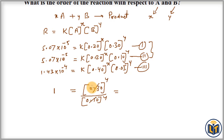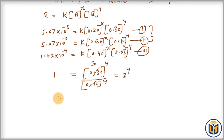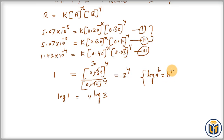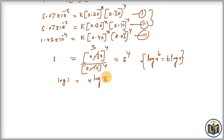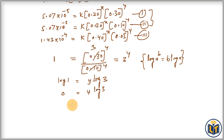This simplifies to (0.30 / 0.10) raised to Y, which gives 3 to the power Y equals 1. Taking log on both sides using the formula log(a^b) = b·log(a), we get log 1 = Y·log 3. Since log 1 = 0, we have 0 = Y·log 3. Therefore Y = 0.